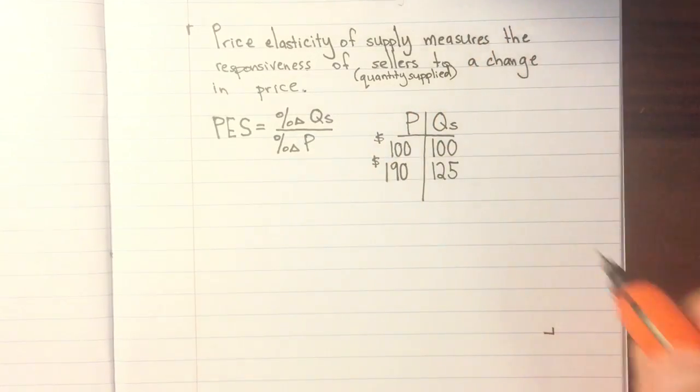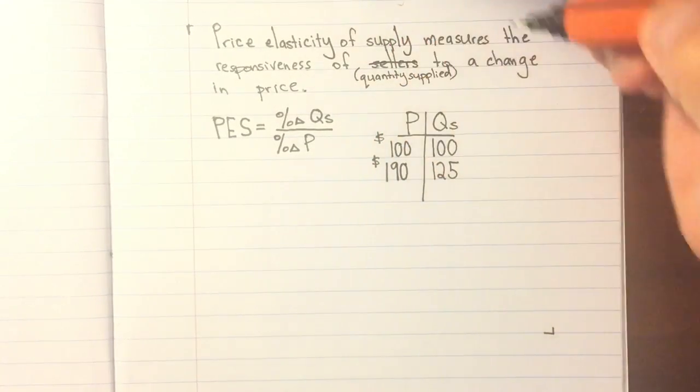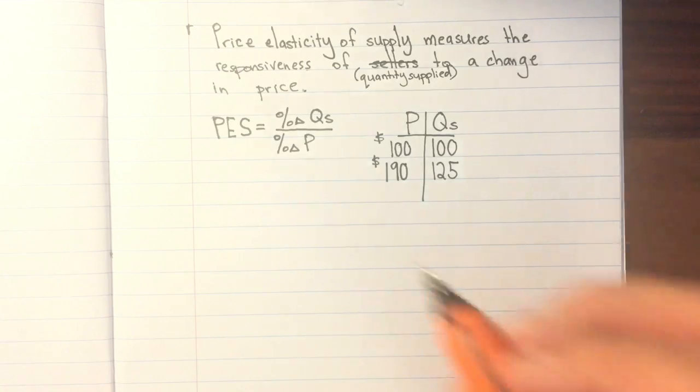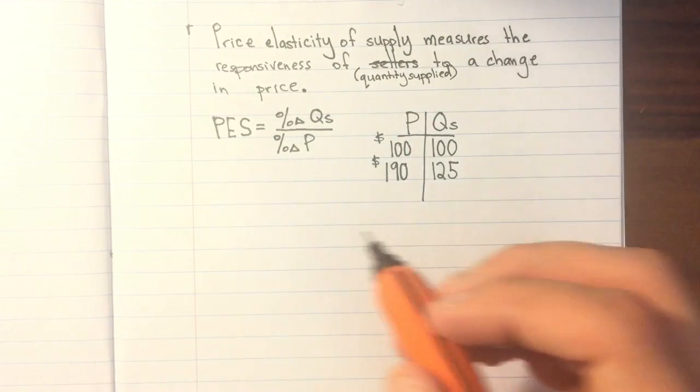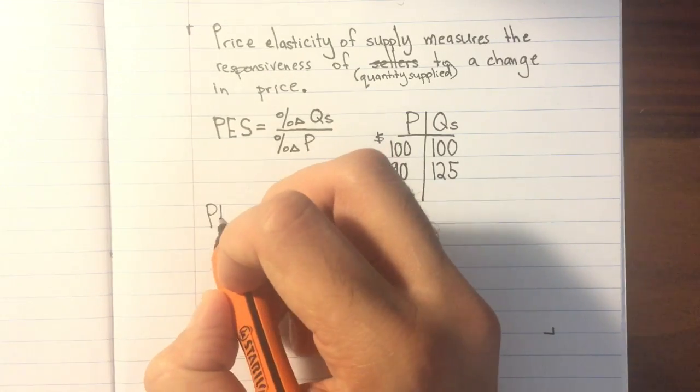I've given you a simple table here so we can do a basic calculation together. We're going to use a price of 100 increasing to 190 and quantity supplied going from 100 to 125 units.